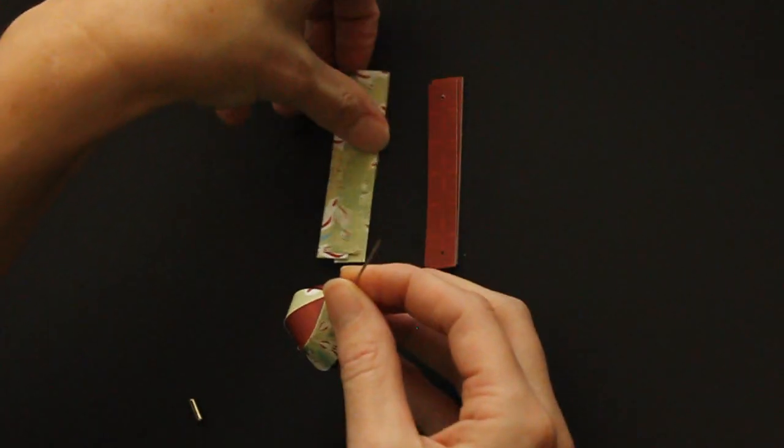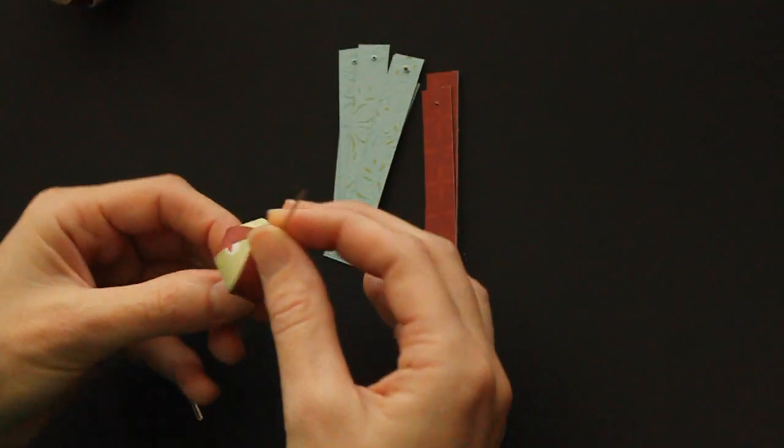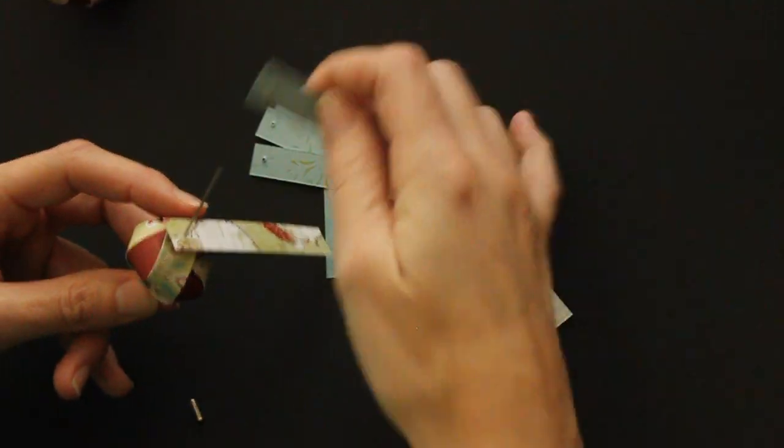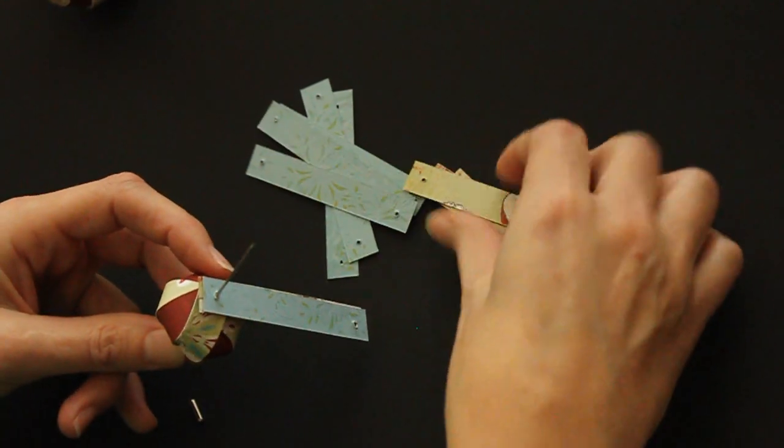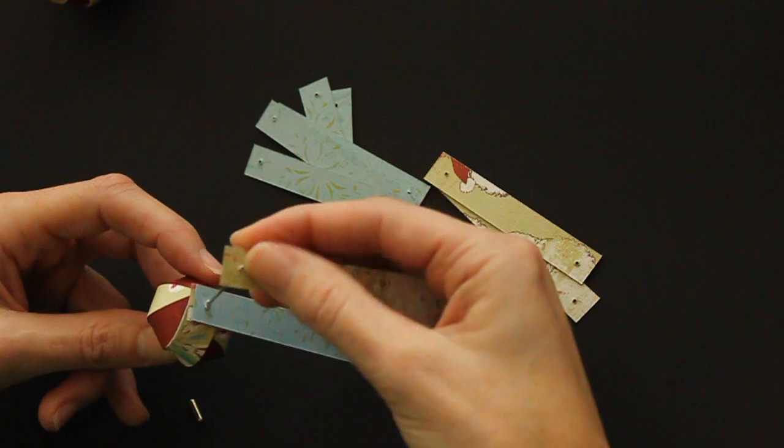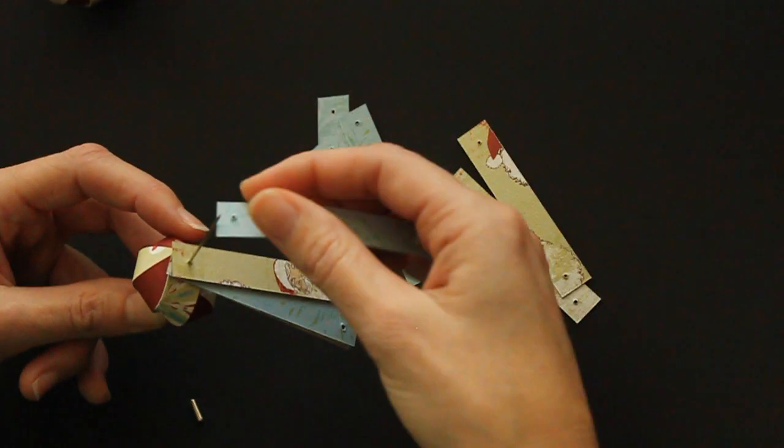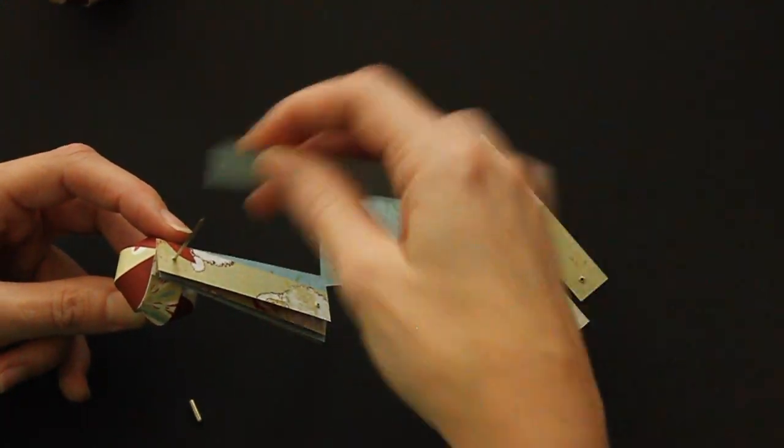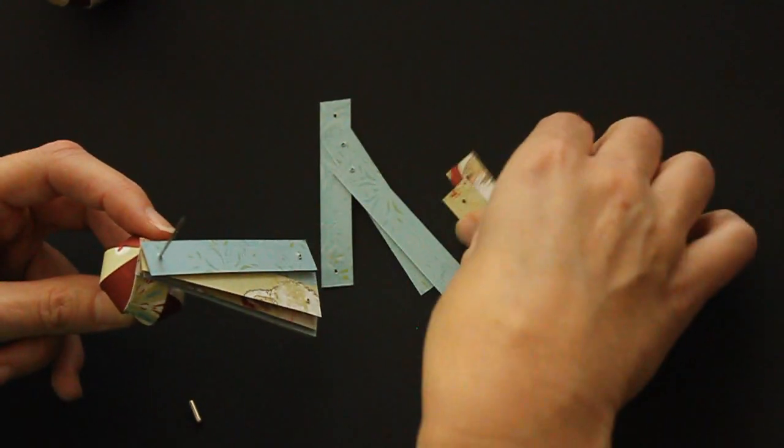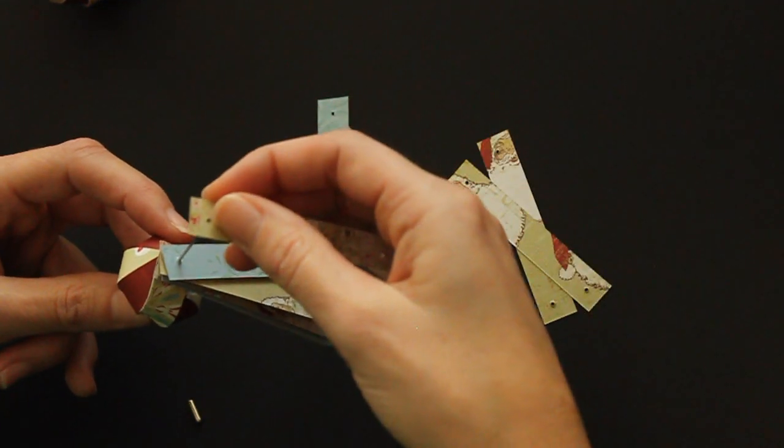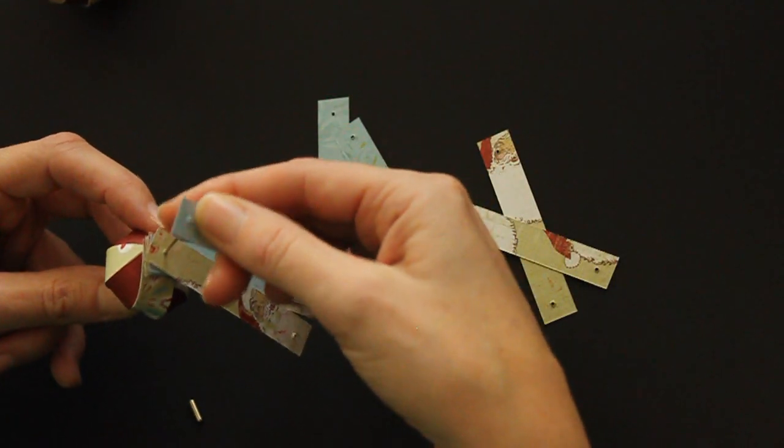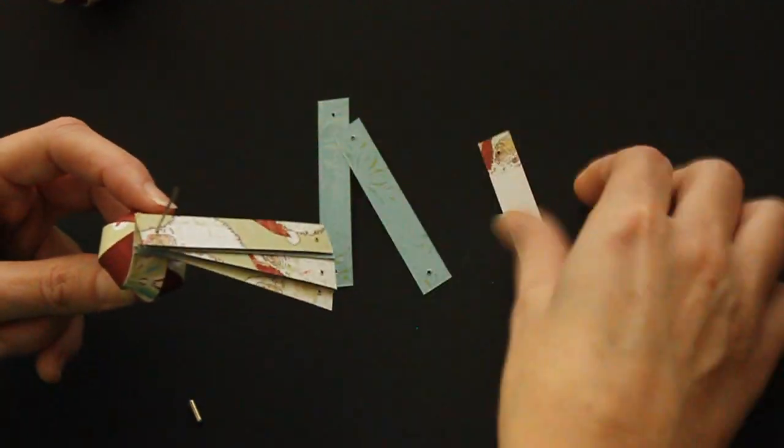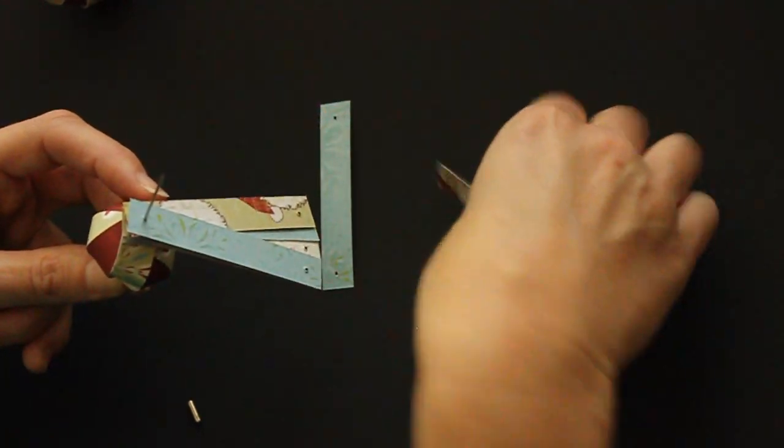Now you do the same thing with your 3-inch strips. I turn them around and start alternating them. And with the 3-inch strips, you'll have 12 pieces total, and with the 2-inch strips, you'll have 8 strips.